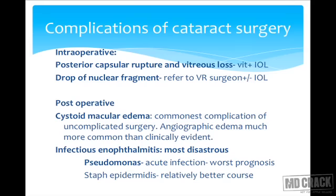Complications of cataract surgery are divided into intraoperative and postoperative. The most notable intraoperative complications include posterior capsular rupture and the drop of a nucleus fragment. Posterior capsular rupture can be associated with vitreous loss or not, and management depends on the degree of vitreous loss. A dropped nucleus fragment needs urgent referral to a retina surgeon for complete vitrectomy and fragment removal.